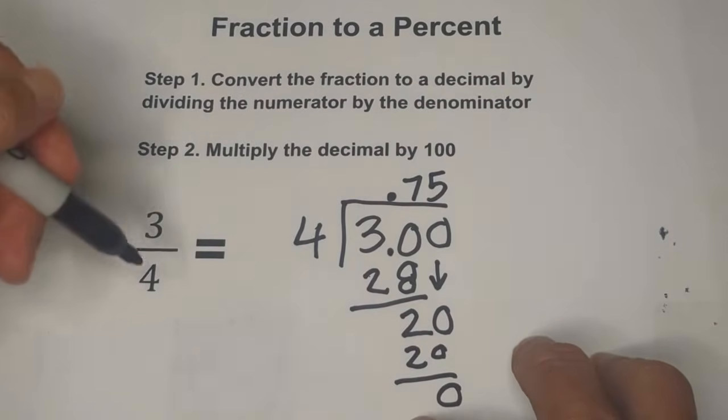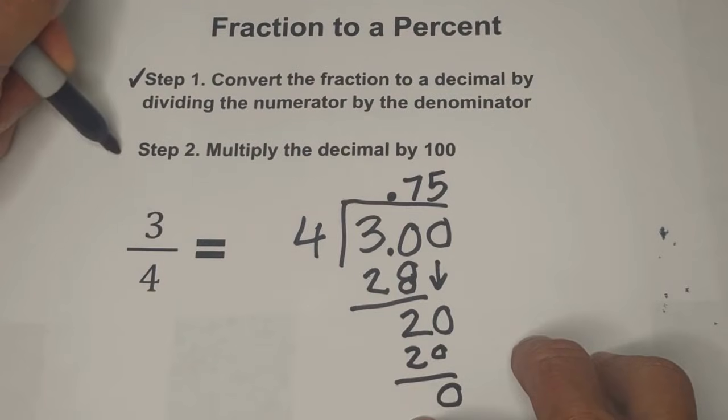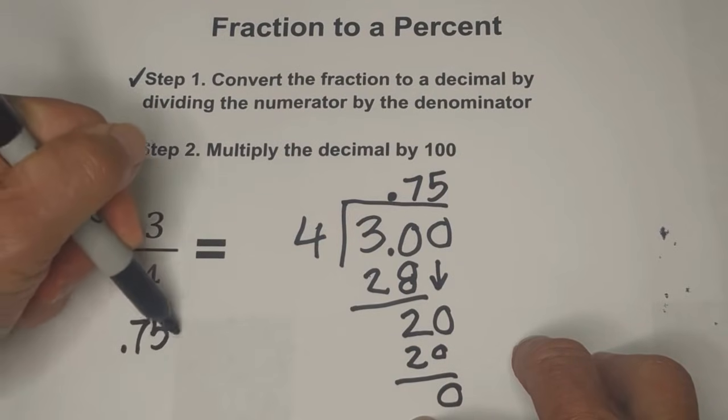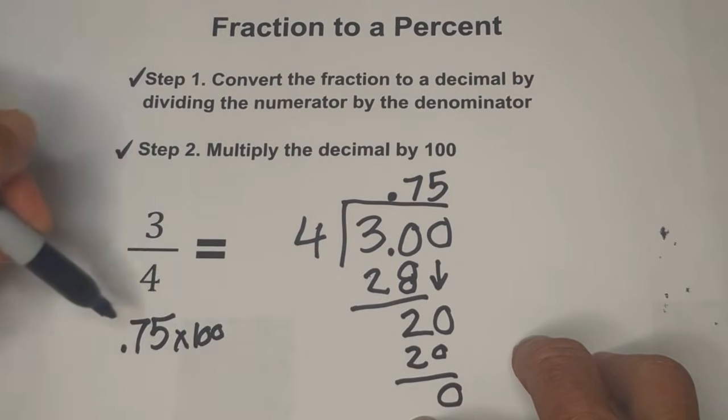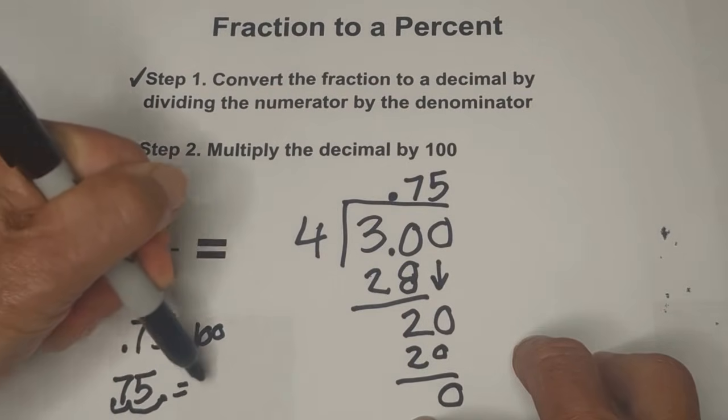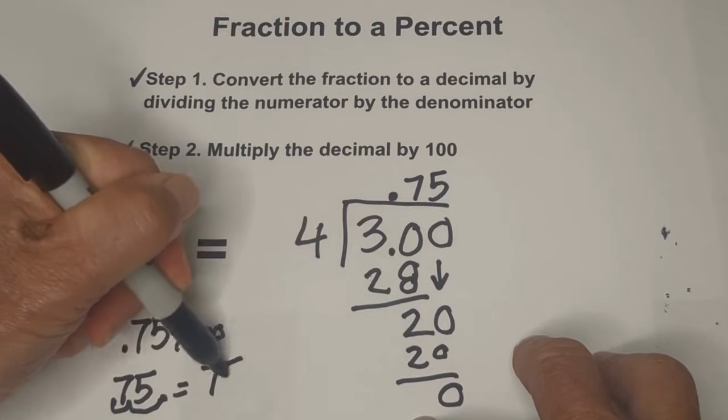So now we've completed step one. Now let's move on to step two. We have a decimal of seventy five hundredths times one hundred and all we do is we're going to move the decimal two places to the right. So we have seventy five hundredths with one, two, so it equals seventy five percent.